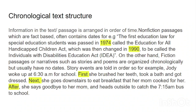So I'm going to give an example: 'The first education law for special education students was passed in 1974, called the Education for All Handicapped Children Act, which was then changed in 1990 to be called the Individuals with Disability Education Act.' Right then and there you realize that time order is being used. I'm telling you the first act passed in 1974, then I go on to tell you the other act passed in 1990. Clearly I'm trying to inform you on special education laws.